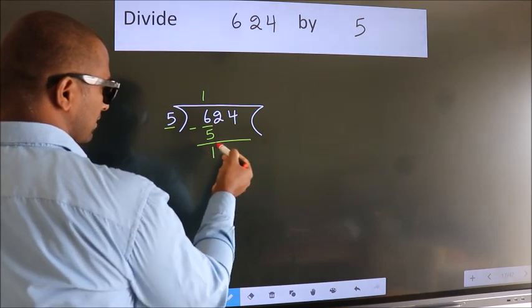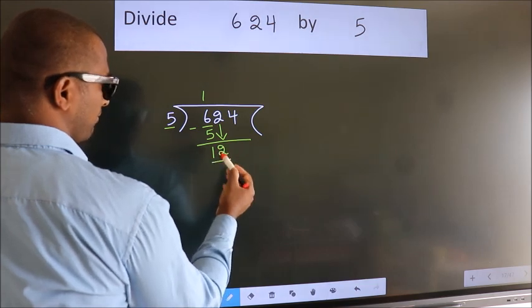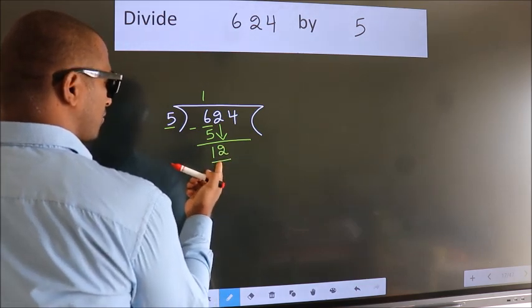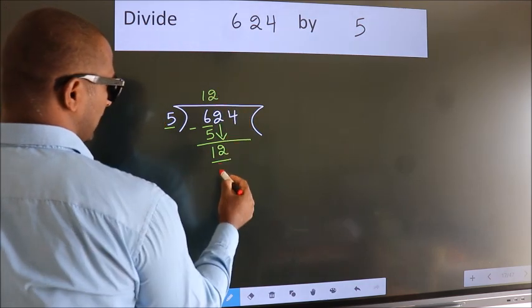After this, bring down the beside number. So 2 down. So 12. A number close to 12 in the 5 table is 5 twos 10.